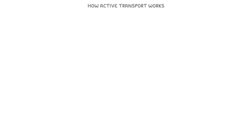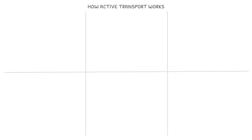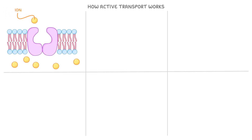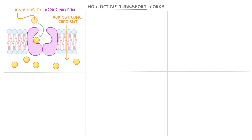Next, let's explore how active transport works when transporting simple molecules and ions, by breaking it down into six key stages. Let's say we've got an ion that needs to be moved across a cell membrane, but because it would be moving against its concentration gradient, it needs to move by active transport. First, the ion binds to a specific carrier protein on the side of the membrane where it's at a lower concentration.